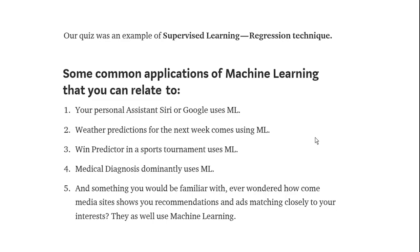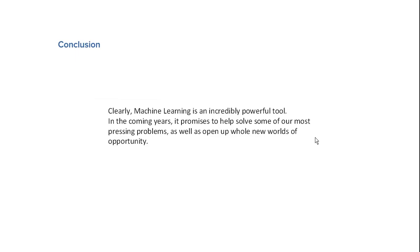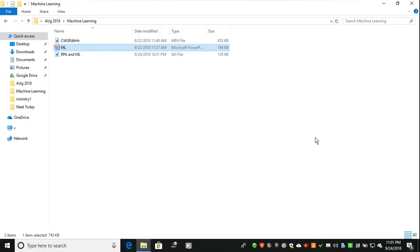When you talk about machine learning with supervised regression techniques, you can see examples like Google, Siri from Apple, or medical diagnosis — if you give the medical report it will diagnose and give the output. These all come under machine learning. When machine learning is properly developed and integrated with RPA in the proper manner, it reduces manual intervention. Thanks for watching, we'll see you in the next video.